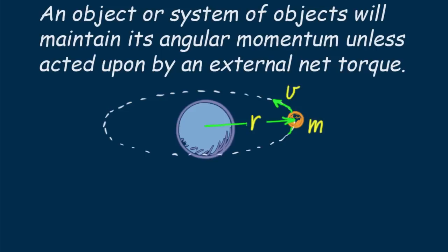Likewise with the planets that orbit the sun and those orbiting other stars beyond the sun. Angular momentum is a fact of everyday life for astronomers. Angular momentum and a related concept — rotational inertia — is nicely demonstrated in physics classes when the instructor stands on a rotating turntable.